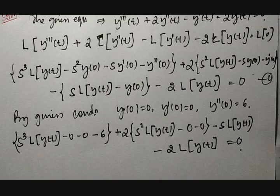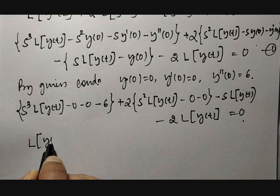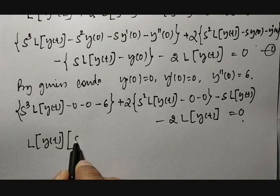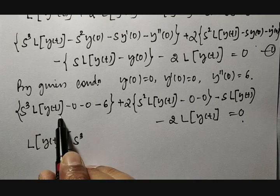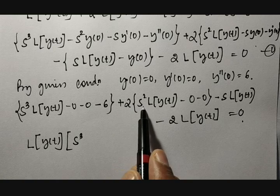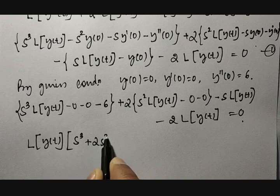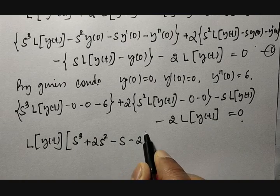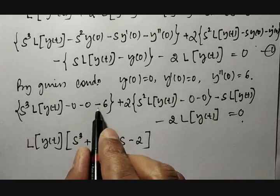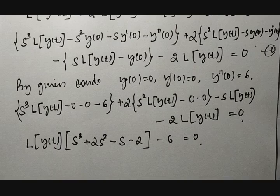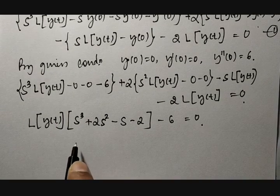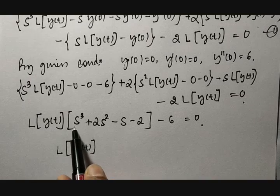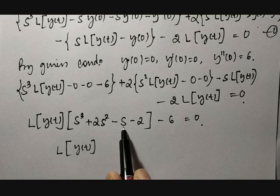Simplifying by taking L{y(t)} common, what remains is s cubed plus 2s squared minus s minus 2, and the remaining constant is minus 6, equal to 0. Sending 6 to the other side: L{y(t)} times (s cubed plus 2s squared minus s minus 2) equals 6. Factorizing: taking s squared common gives s squared times (s plus 2), and taking minus common gives minus(s plus 2), so s plus 2 is one factor and s squared minus 1 is the other.